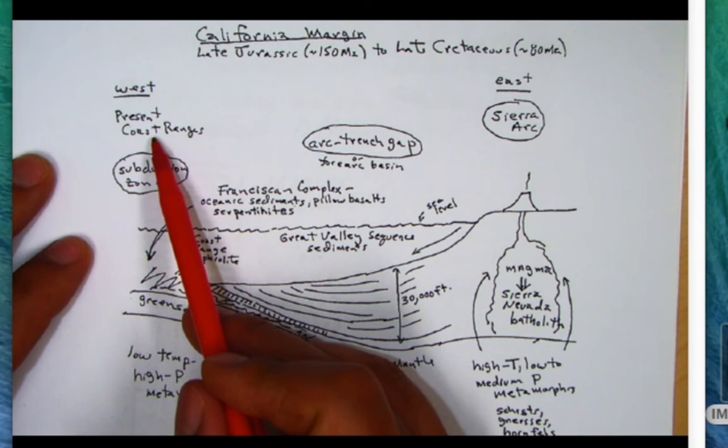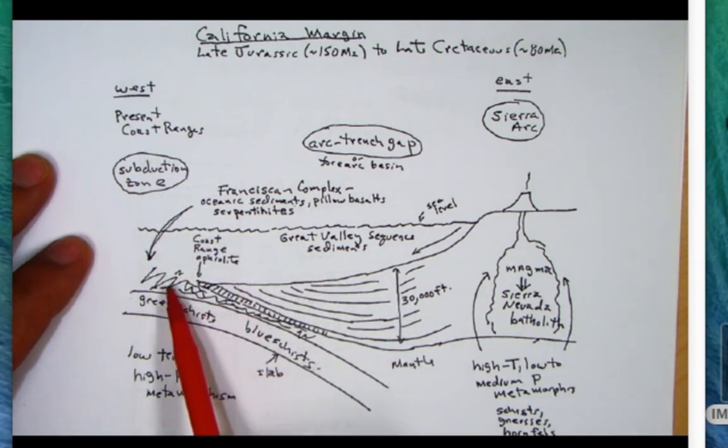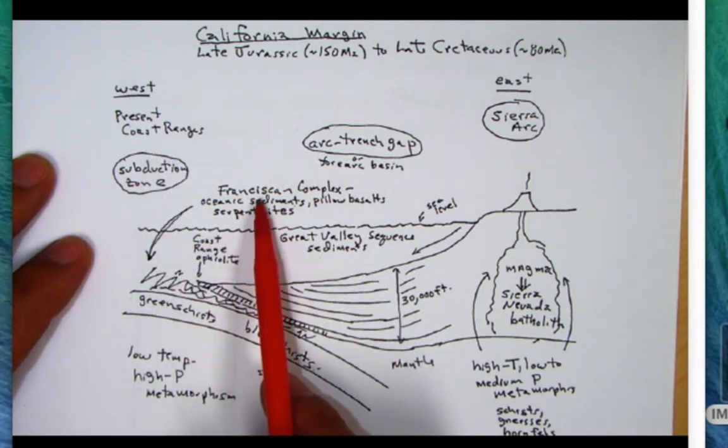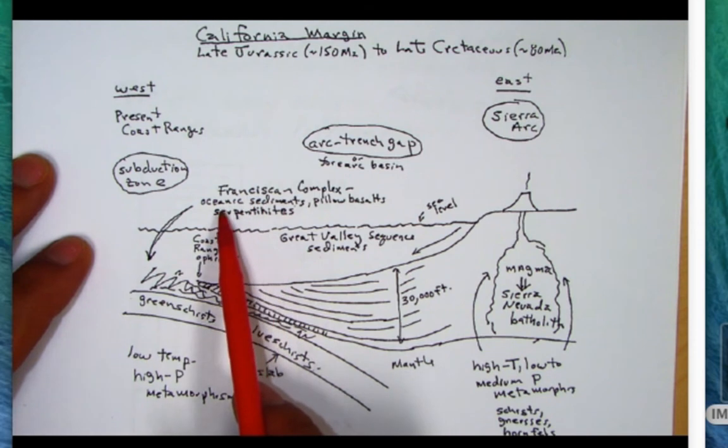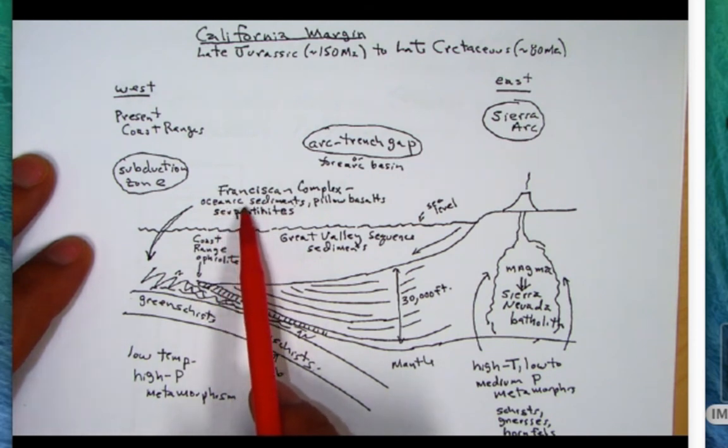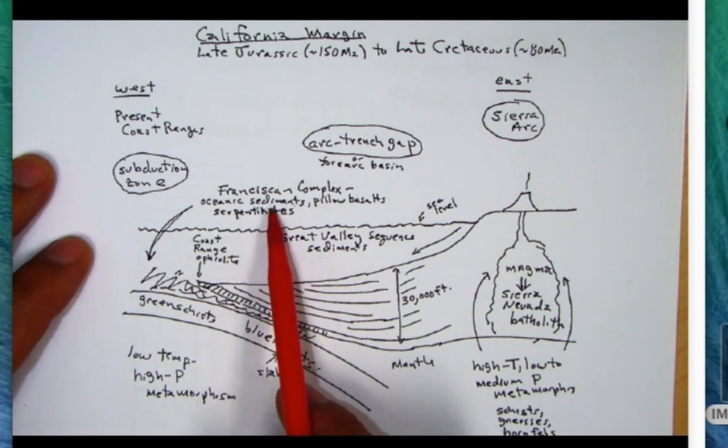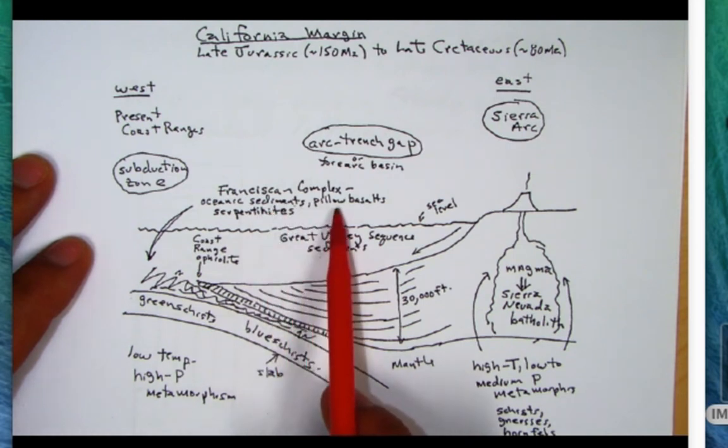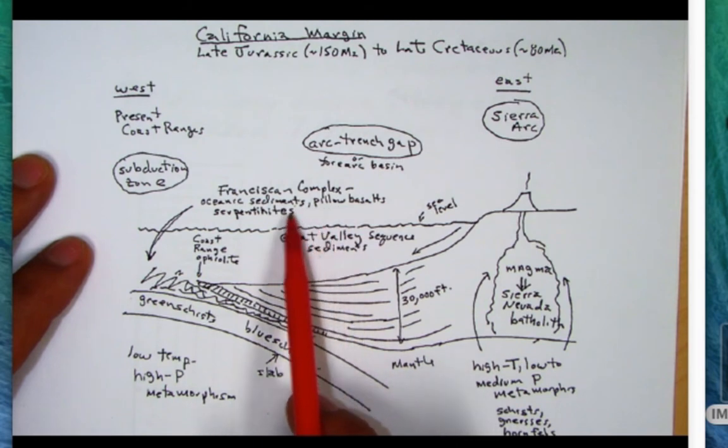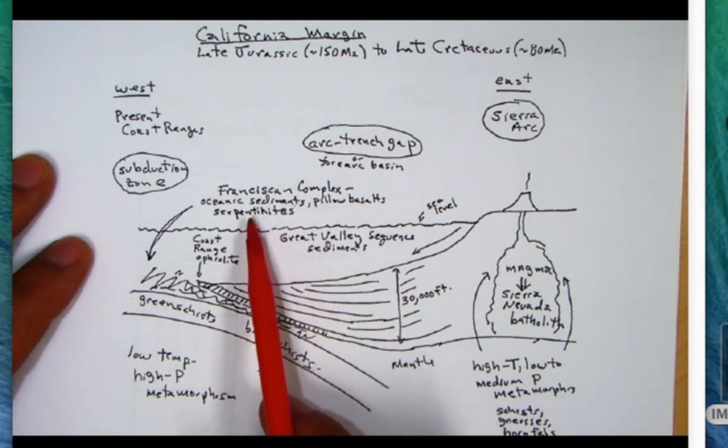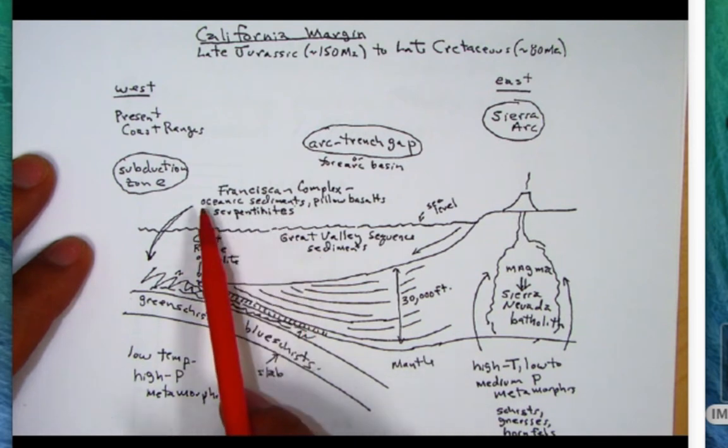That's going to be forming our Franciscan Complex, the Franciscan which includes oceanic sediments, shales, limestones, marine chert, graywacke sandstones, pillow basalt lava, and hydrothermally altered serpentinite. As we go across the Central Valley, a lot of sediment was being shed off the continent and the magmatic arc.